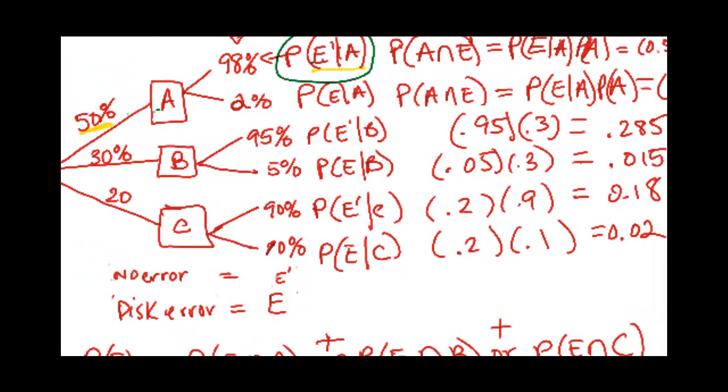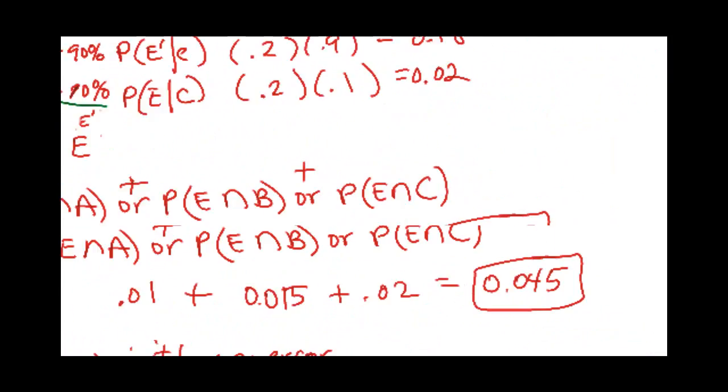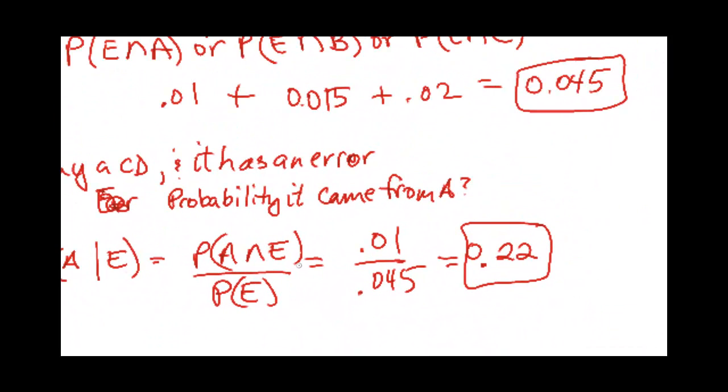And then, for instance, if you wanted the probability of an error, it would be all the different ways that there's an error. There's an error here. There's an error here. And there's an error here. So you would add them up. And then conditional probability is just the formula plugged in.